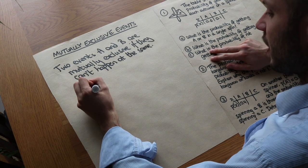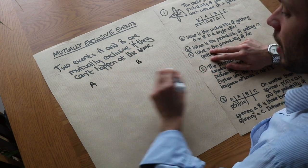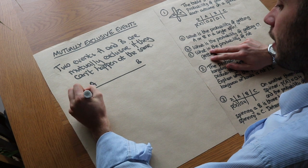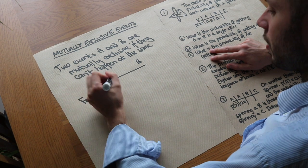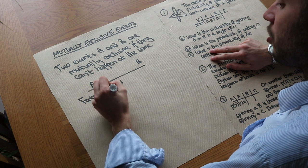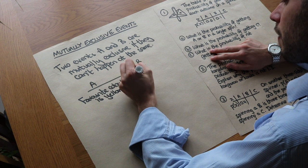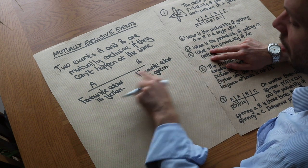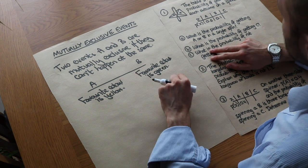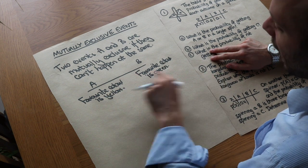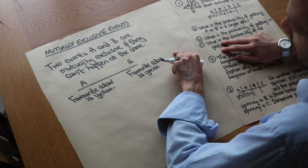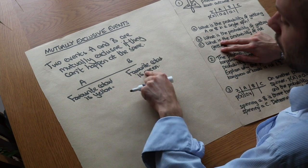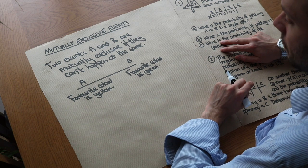Let's do some examples. The first event could be that your favourite colour is yellow, and a mutually exclusive event would be that your favourite colour is green. To be mutually exclusive means they can't happen at the same time. That doesn't mean it has to be one of these — there could be some other event, C, where your favourite colour is blue — but just that those two events can't happen at the same time.